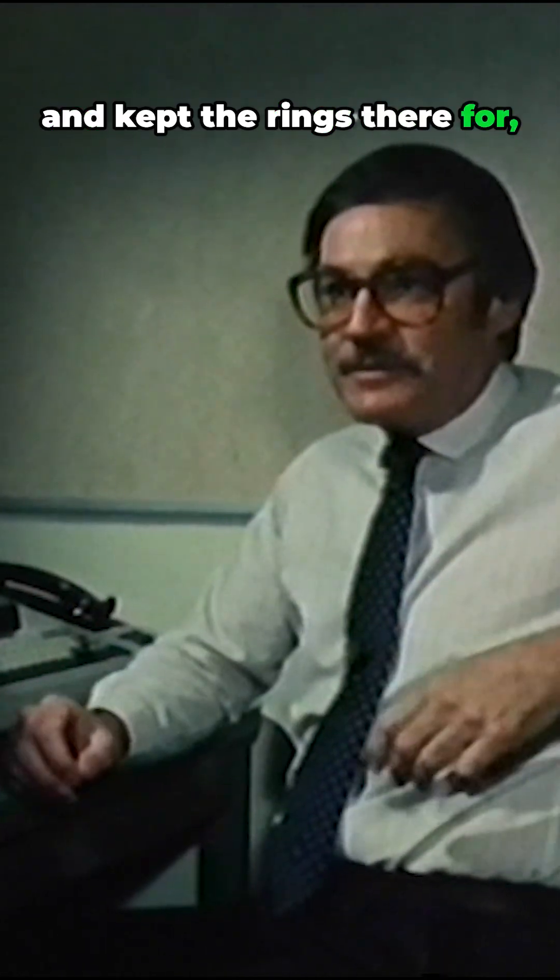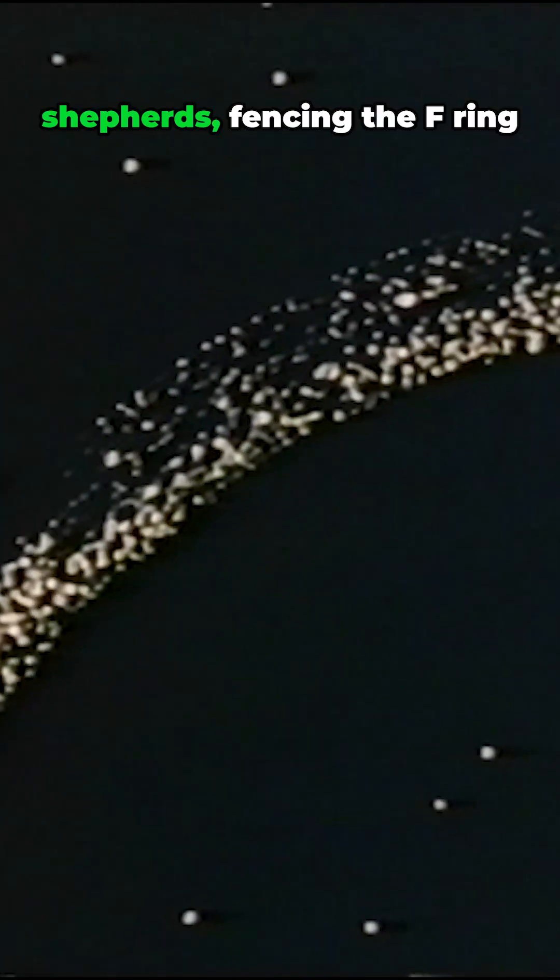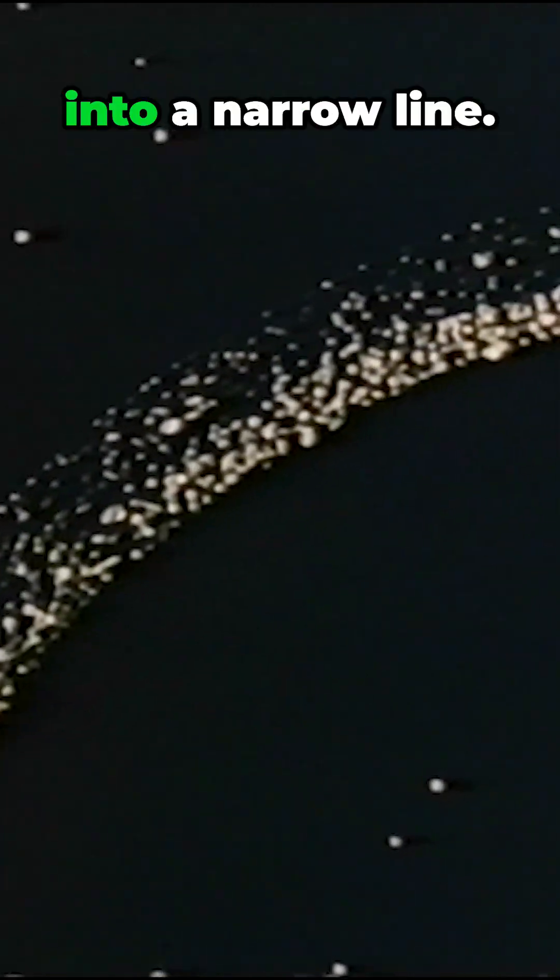Voyager also discovered another two moons orbiting just inside and outside this F ring. S-13 and S-14 behave like shepherds, fencing the F ring into a narrow line.